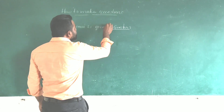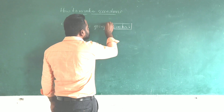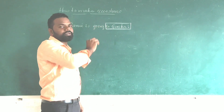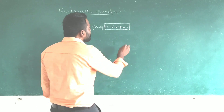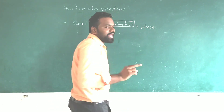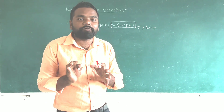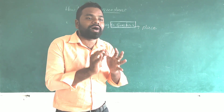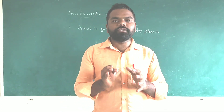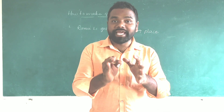Now, the underlined part indicates something. How it indicates — what it indicates — we need to see what this is. Gundur is actually a place. When it is a place, we need to understand what kind of question we need to ask. As I told you clearly, when it is a place, we have to use 'where.' Where indicates place.